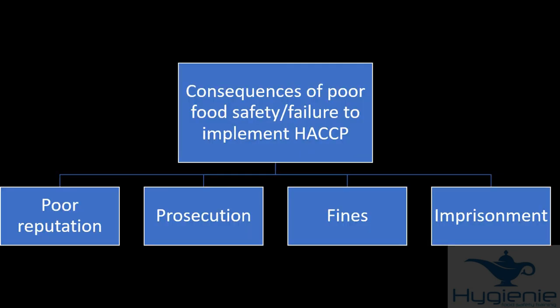What are the consequences of poor food safety or failure to implement HACCP? Examples include poor reputation, prosecution fines and potential imprisonment. Who instigates a prosecution? EHO do.